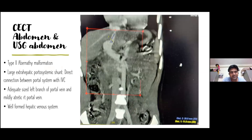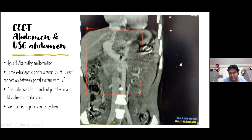We did a CT abdomen and USG abdomen, which confirmed type II Abernathy malformation. There was a large extra-hepatic portosystemic shunt — a direct connection between the portal system and the IVC. There was adequate size left branch of the portal vein, while the right branch was mildly atretic. The hepatic venous system was well formed. On the CT image, you can see the IVC, the abdominal aorta, the dilated portal venous system, and the extra connection from the portal vein joining the IVC. The diameter of the connection was 11 mm and the length approximately 20 mm. The liver parenchyma appears normal.